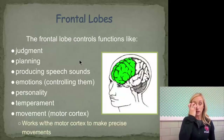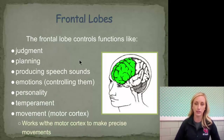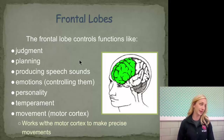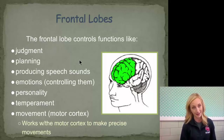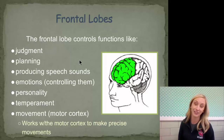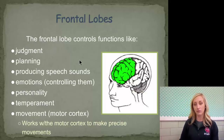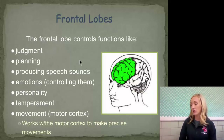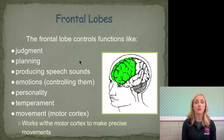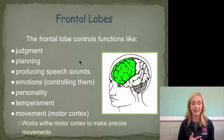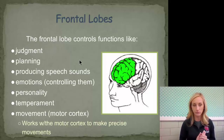The frontal lobe controls functions like judgment — for example, deciding whether it's a good idea to drive while intoxicated. Your frontal lobe is compromised when you do things like that. It also controls planning for the future, like deciding to take the ACT to go to college one day. It controls producing speech sounds, emotions — meaning filtering them — and your frontal lobe actually acts as a filter for your amygdala.